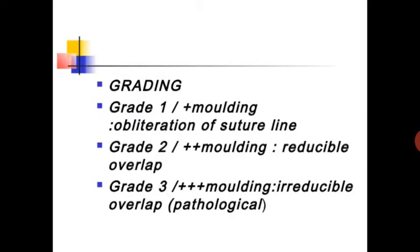Grade 2 (++) molding is reducible overlap of cranial bones. Grade 3 (+++) molding is irreducible overlap, which is pathological.